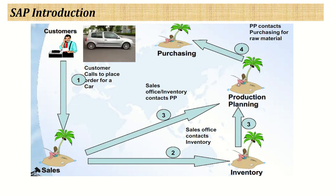If there is no inventory and no production is going on, there is a concept called MRP — Material Requirements Planning. If there is no inventory and no production is going on, through MRP the system generates the requirement for all the raw material or finished goods needed to manufacture the end product. The purchasing department places the order to the vendors, and once the production department receives all the raw material and semi-finished material, they manufacture that car. After that, the final product appears in inventory and the sales department can deliver that product to the customer.